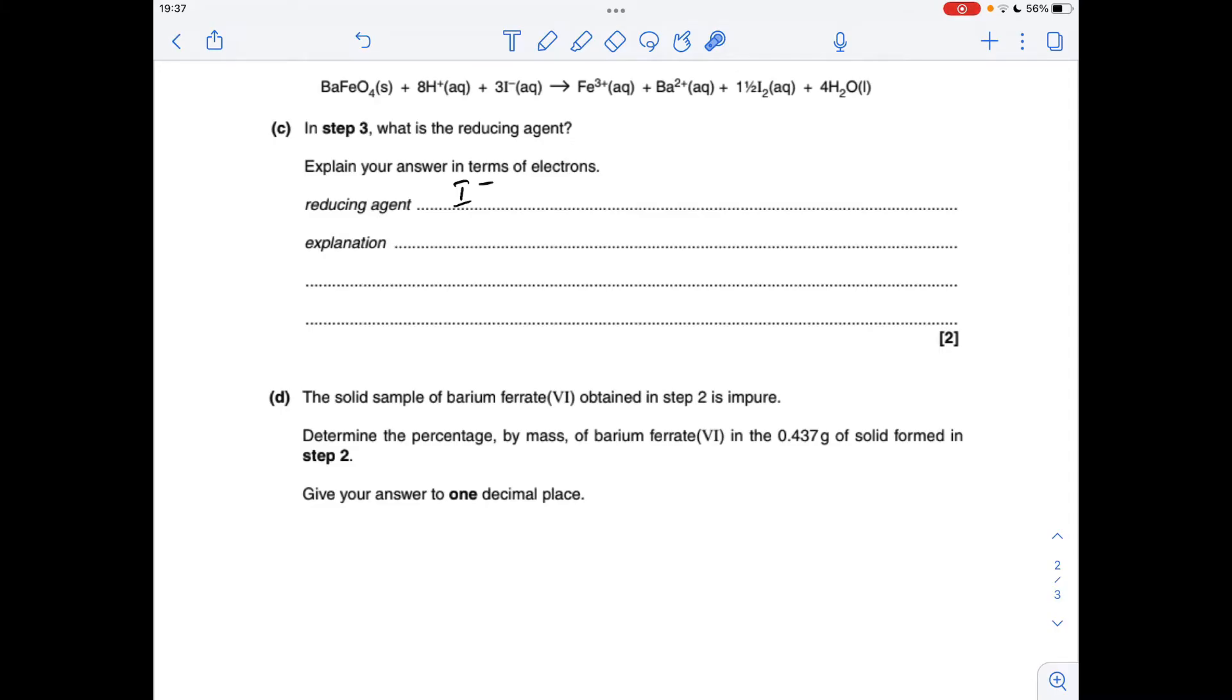We've identified the reducing agent, I⁻ ions. So how do we explain that in terms of electrons? If we look for the thing that's been reduced now, that's technically the iron in the FeO₄²⁻ ion, because it's at +6 here, and it's gone down to +3 in the Fe³⁺ ion. All I'm saying to explain why I⁻ is a reducing agent is that it donates electrons to the FeO₄²⁻ ion.